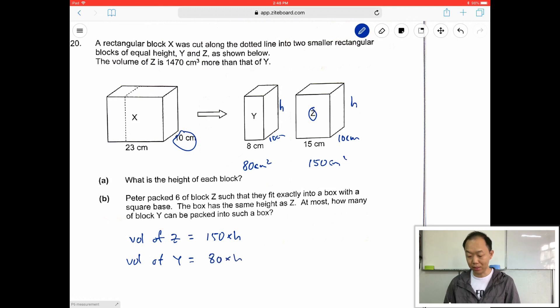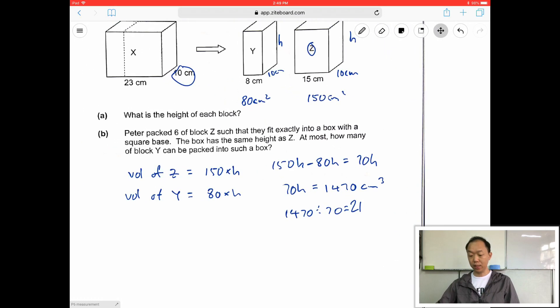So if I find the difference, which is 150h minus 80h, it should give me 70h. And 70h is actually equal to 1470 cm³. So if 70 times h gives me 1470, I'll find h. 1470 divided by 70. Okay, so the height h is actually equals to 21. Next, part b.